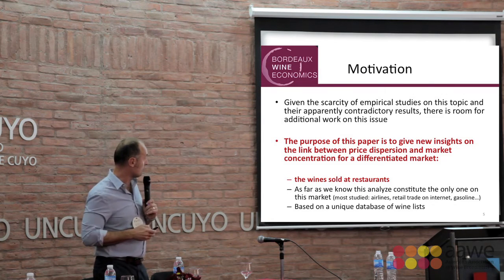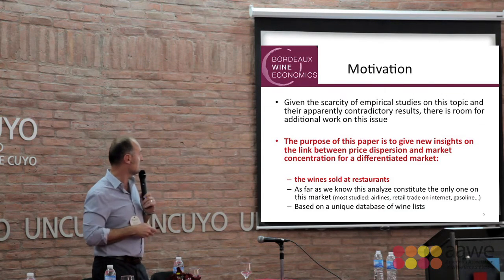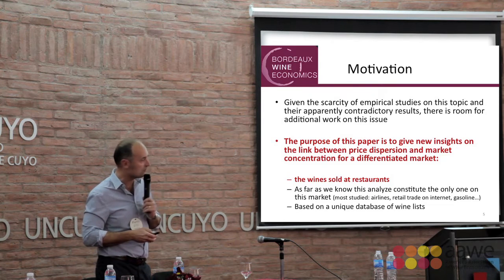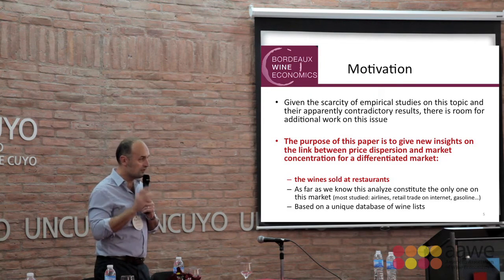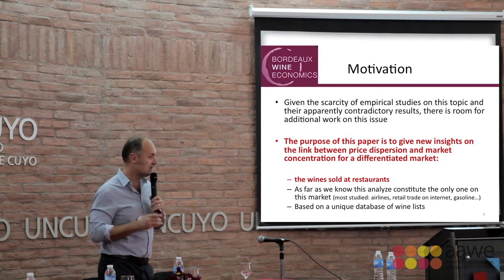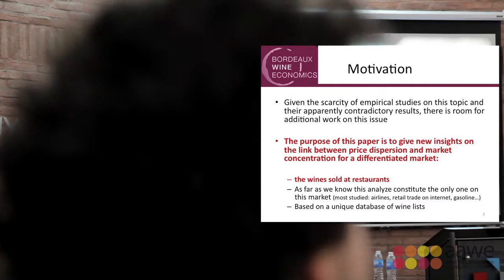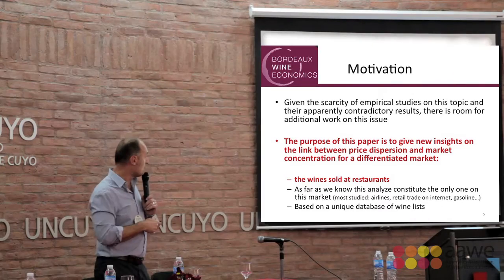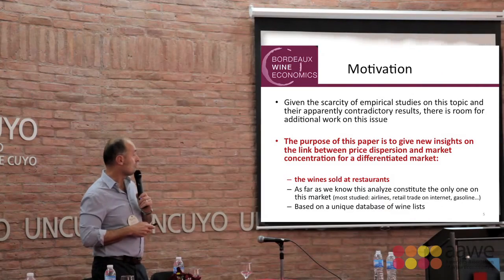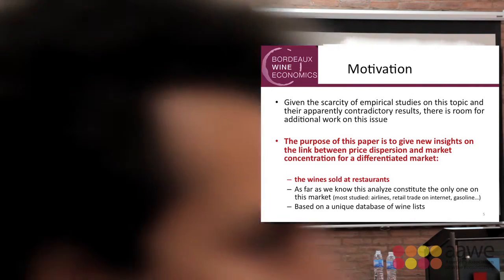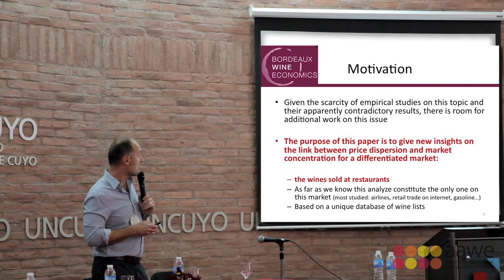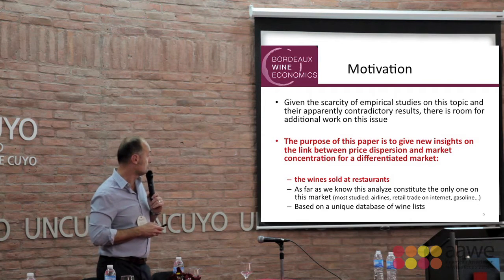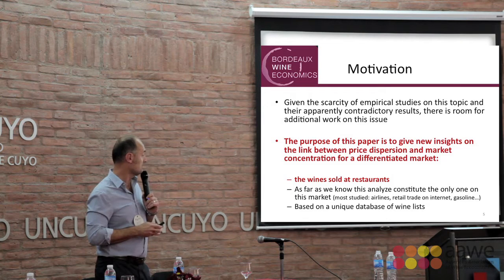The purpose of this paper is to give new insight on the link between price dispersion and market concentration for a differentiated market. This market is wines sold at restaurants. As far as we know, this analysis constitutes the only one on this market.